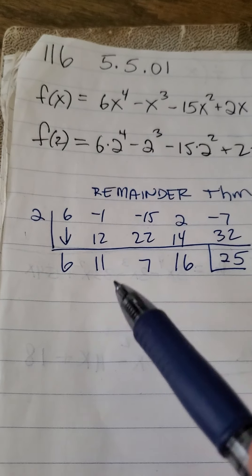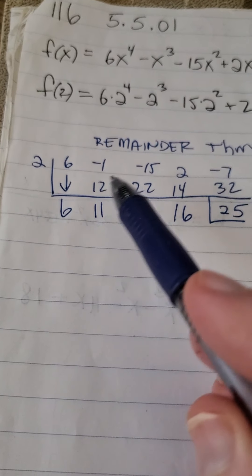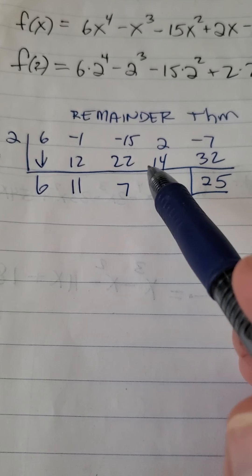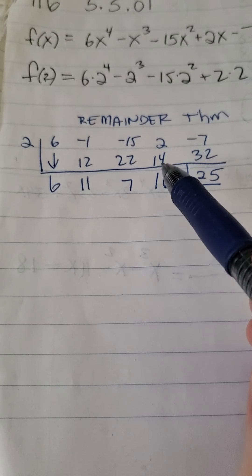If we do the synthetic division, we bring down the 6, multiply it by 2, get 12, add that up, get 11, multiply it by 2 again, that 2 right there, get 22, add it up, get 7, multiply it by 2, get 14.